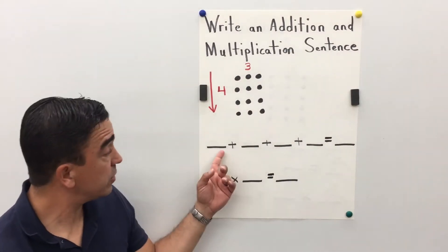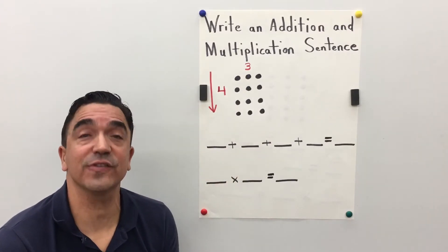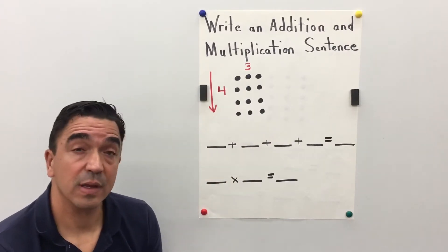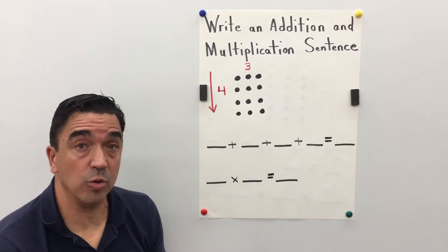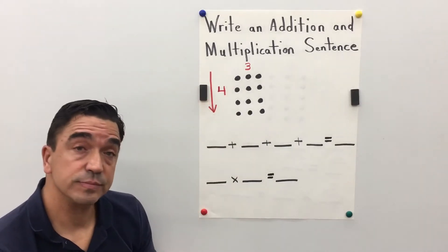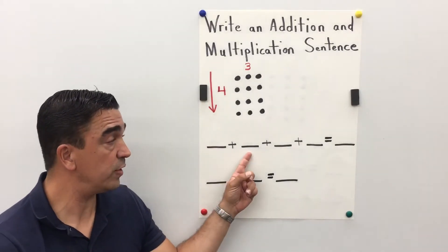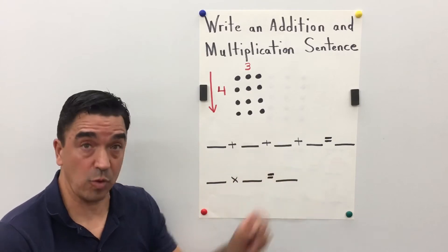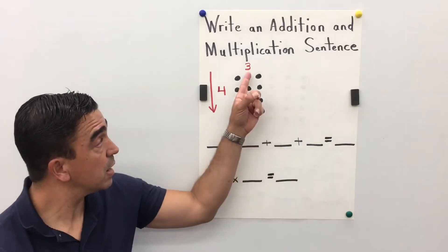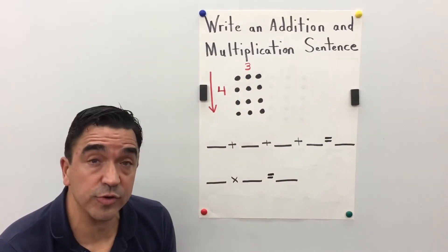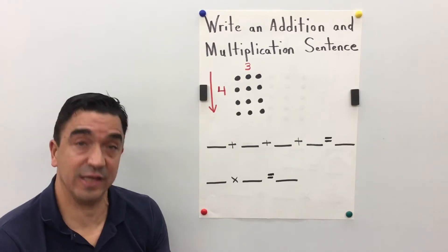Let's start with our addition sentence. Four rows. One, two, three, four. Three counters in each row.